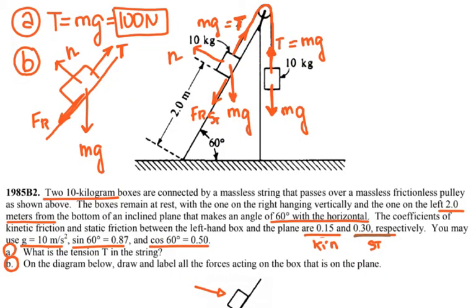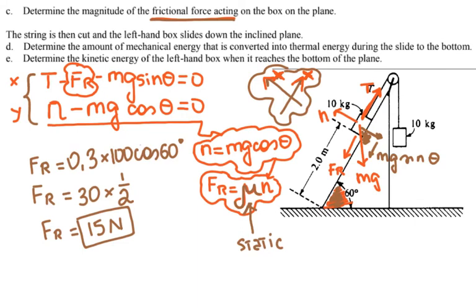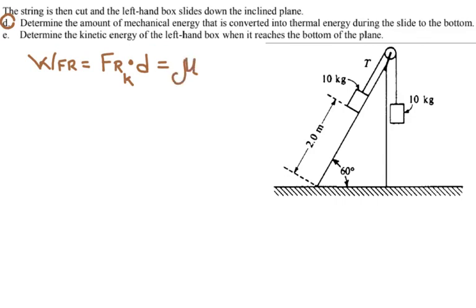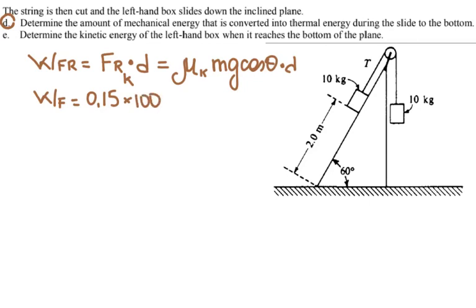The kinetic friction coefficient is 0.15. The kinetic friction force = mu_k × N = mu_k × mg cosθ. The work done by friction = friction force × distance = 0.15 × 100 × cos 60° × 2 meters = 0.15 × 100 × 0.5 × 2. Cos 60° is one-half and the distance is two meters, so those multiply to give 1, and 0.15 × 100 = 15. The work done by friction, which becomes thermal energy, is 15 joules.